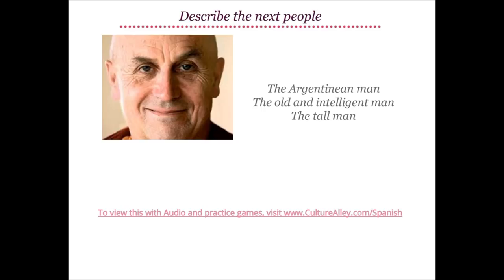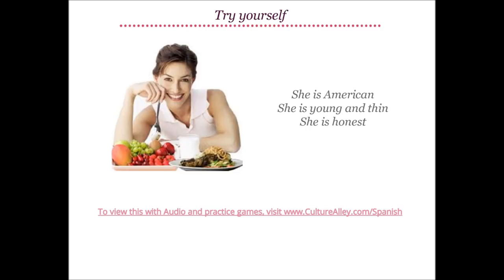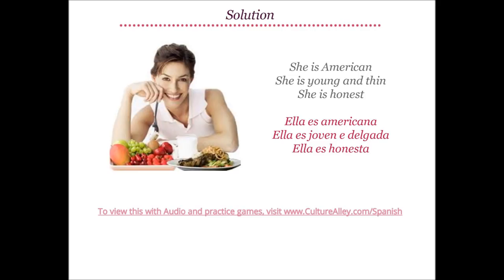Now describe the next people. The Argentinian man is translated as el hombre argentino. The old and intelligent man becomes el viejo e inteligente hombre — again, we use e and not y as inteligente starts with an E sound. The tall man is el hombre alto. Can you try translating: she is American — ella es americana; she is young and thin — ella es joven y delgada; she is honest — ella es honesta.